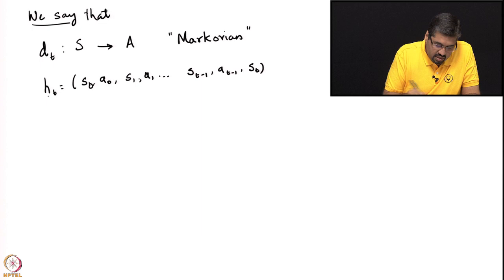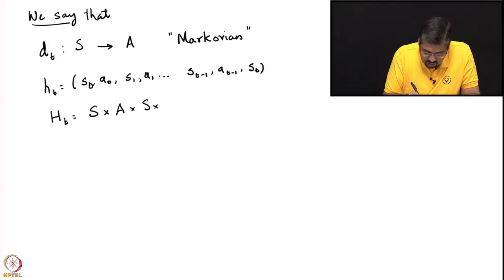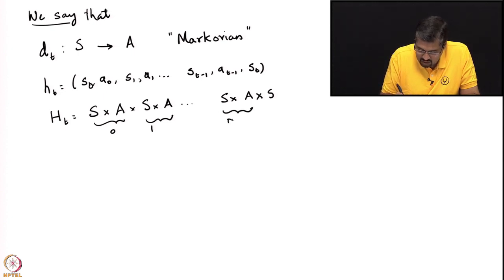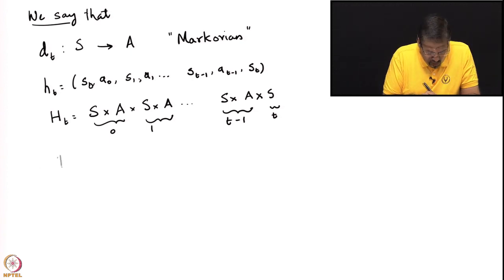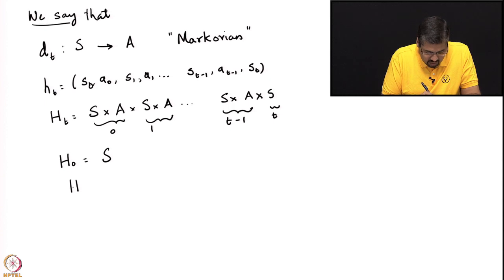This is the history available at time t, comprising the entire sequence of states the system has gone through and the sequence of actions chosen up until that time. The set of all histories is denoted by capital H_t, which is simply the set S × A × S × A × ... × S × A × S. For example, the history at time 0 is simply the initial state s, and the history at time 1 is S × A × S, and so on.